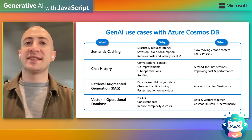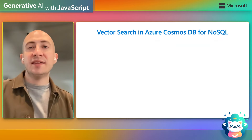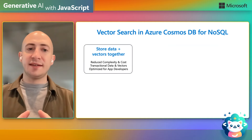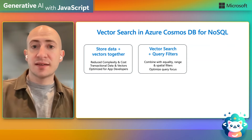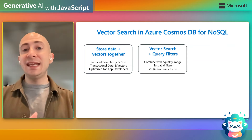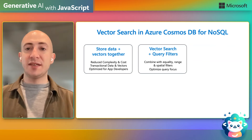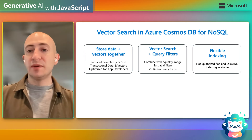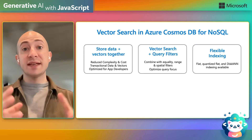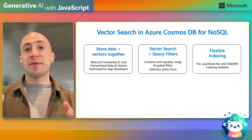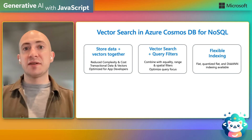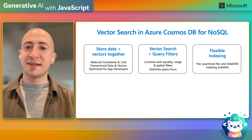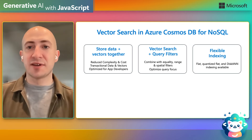We'll see some of these use cases in the demo. We have vector search in Cosmos DB, so we can store our data and vectors together in one database, reducing complexity and cost. Not only can I do vector search, but I can also apply any existing query filters supported in Cosmos DB's NoSQL language — equality, range, or other query filters. We offer multiple indexing types: flat or brute-force exact search, quantized flat search, and disk ANN — a new algorithm we're making available in a Microsoft product for the first time, developed internally at Microsoft Research. It allows very efficient vector search at scale.